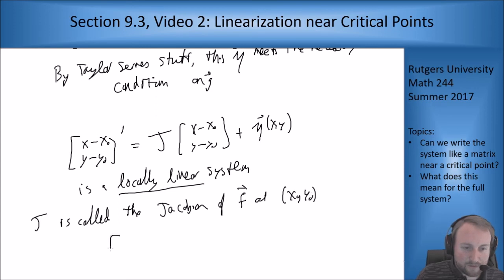This J is called the Jacobian of our function. It always has this form: [[f_x, f_y], [g_x, g_y]] where you evaluate all the functions at (x₀,y₀).